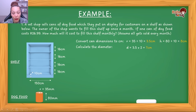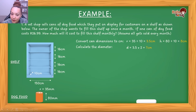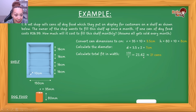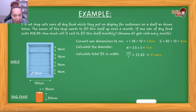Now we have all the information we need. Looking at the shelf, the total width is 150 centimeters. To find how many cans fit next to each other, we take 150 divided by 7 — the diameter of the can — which gives 21.42. Rounding down, because 22 cans won't fit, we get 21 cans. So we can stack 21 cans next to each other on one shelf.